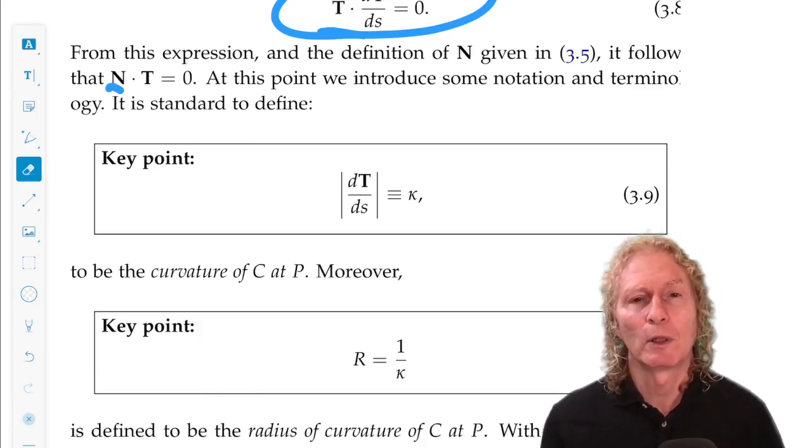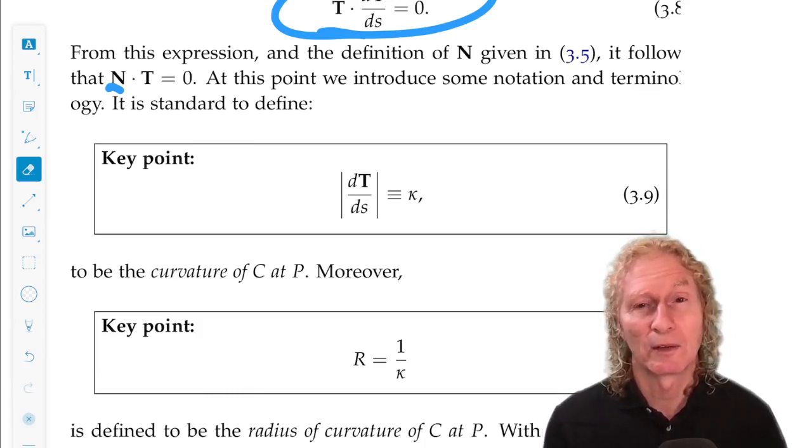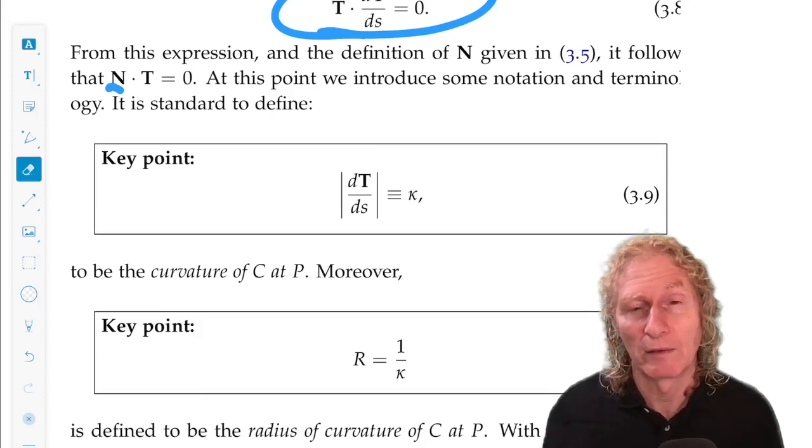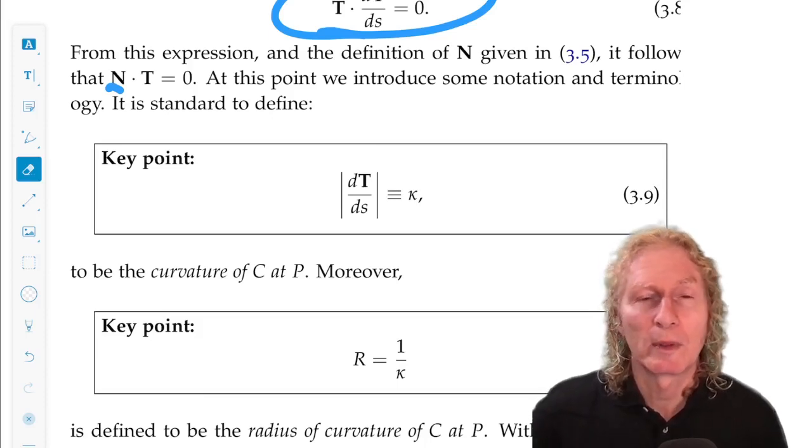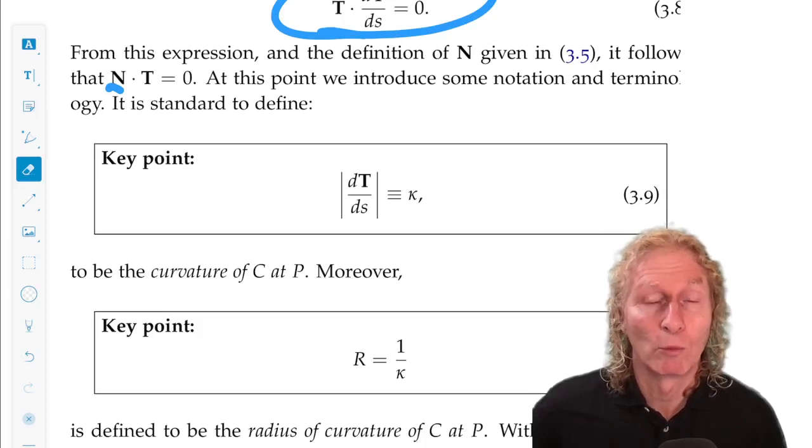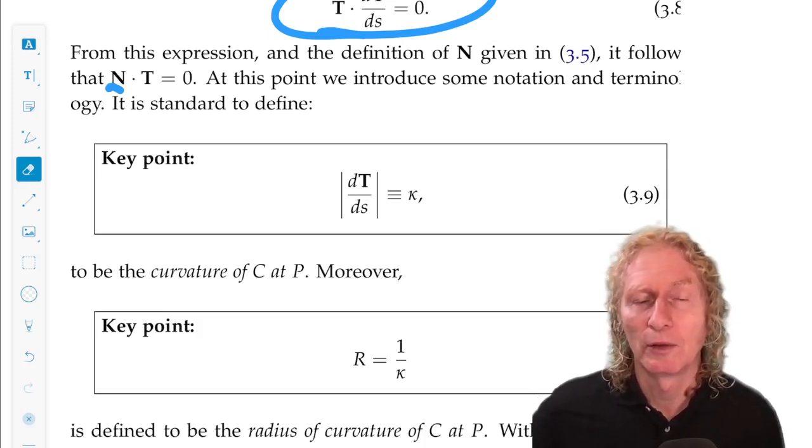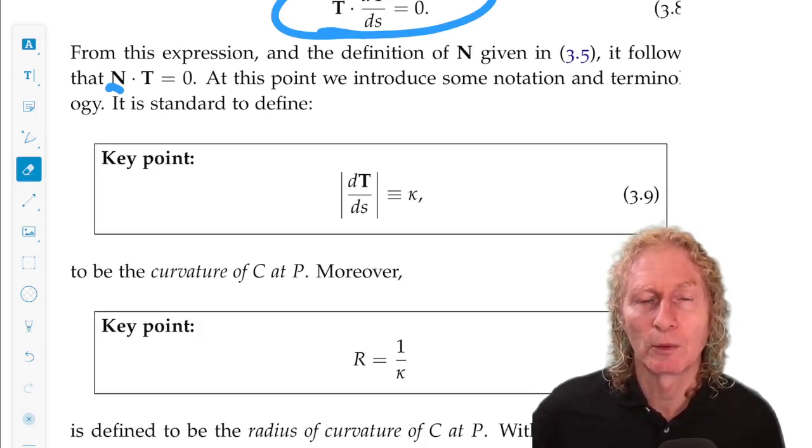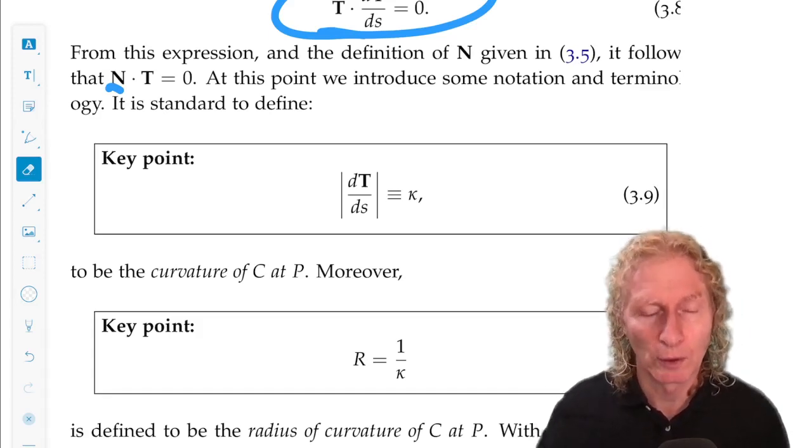So in the xy plane, a straight line would just be the x-axis, so y equals 0, the set of xy such as y equals 0. And a circle would be x squared plus y squared equals 1, for example. So compute the curvatures and therefore the radius of curvature of each of those, and see if it agrees with your intuition.